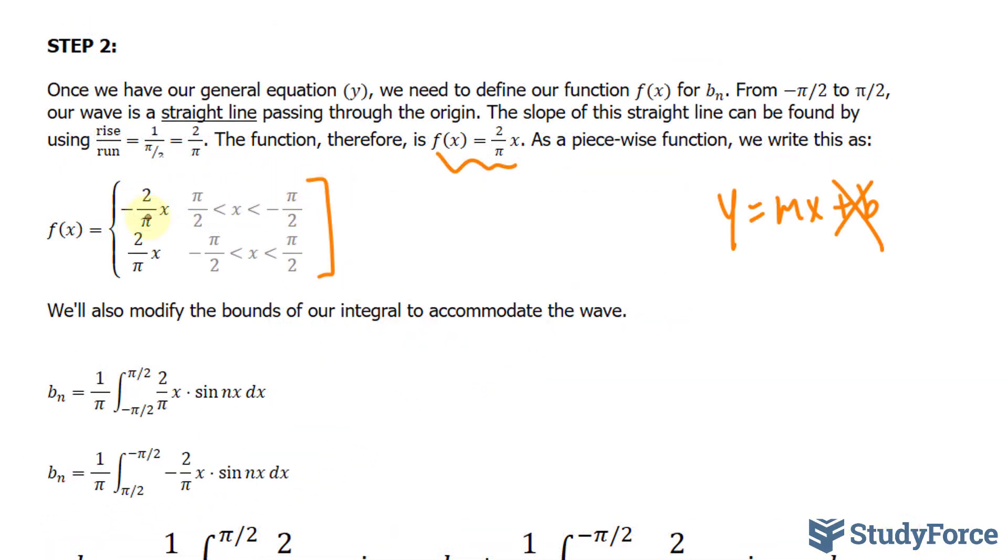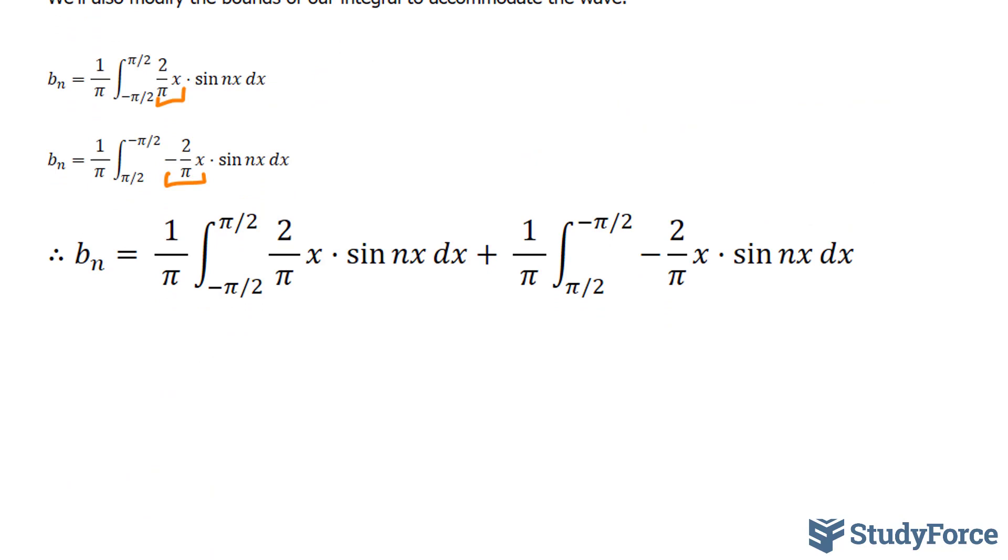Since we have a piecewise function representing f(x), we need two b_n's, one for each of the bounds. Notice that this is from -π/2 to π/2, and f(x) is shown here. And the other b_n has this function with the different bounds. Together, if we add these up, you should end up with b_n equal to the whole right side. This will help us find b₁, b₃, b₅, and so on. That being said, we now need to integrate each of these individually.